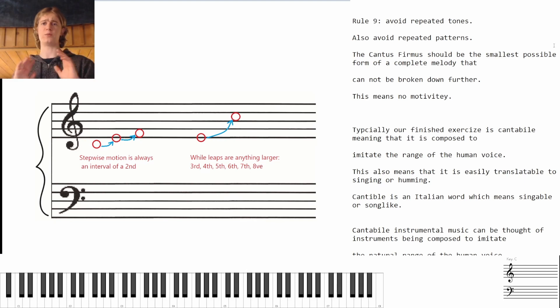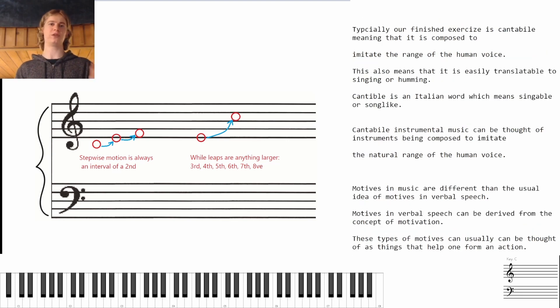Rule number nine: avoid repeated tones. Also avoid repeated patterns. The cantus firmus should be the smallest form of a complete melody that cannot be broken down or subdivided further. This means you have no motivity. Something really good to keep in mind is that typically the Finnish exercise is cantible, meaning that it is composed to imitate the range of the human voice. Cantible is an Italian word which means singable or song-like.